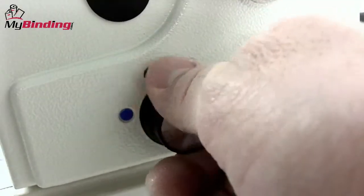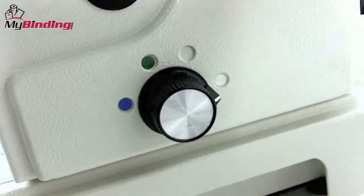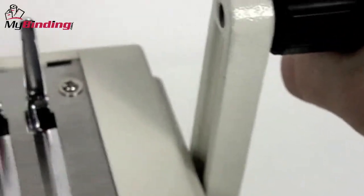The Megabind 1E also includes a depth of punch margin control, so you can control how far the punch is from the edge of the paper. There's also the heavy-duty plastic comb opener.